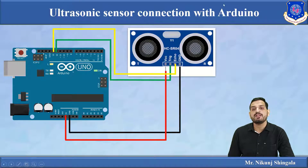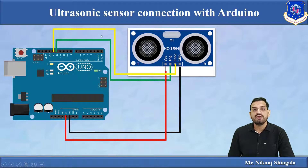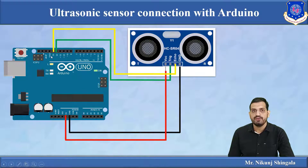For the ultrasonic sensor connection with the Arduino: VCC is connected to 5V by a red wire, the ground pin is connected to the Arduino ground by a black wire, the trigger pin (green wire) is connected to pin 12 of the Arduino, and the echo pin is connected to pin 13 of the Arduino.